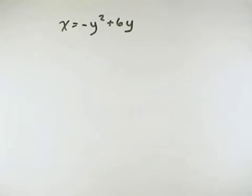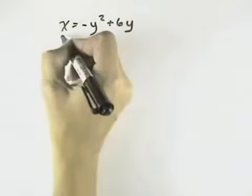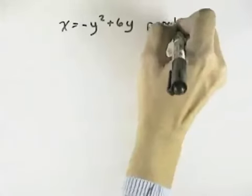In this problem, we want to determine what the graph of this equation will look like. Because x is to the first degree and y is squared, that means we're going to have a parabola.